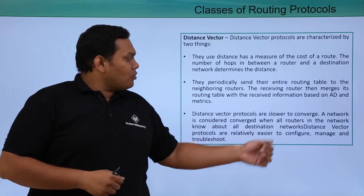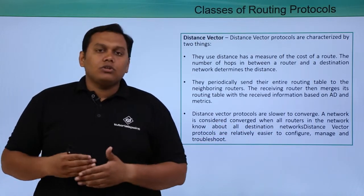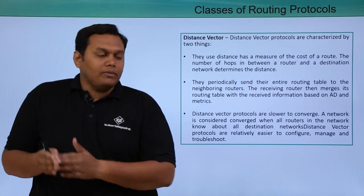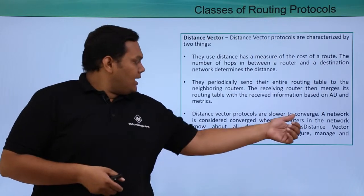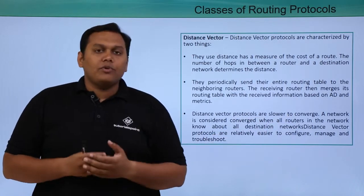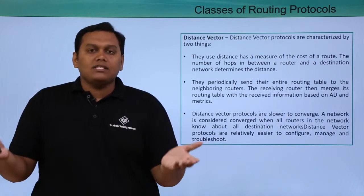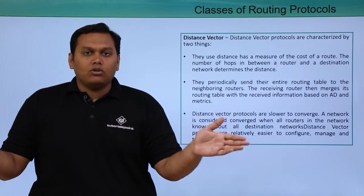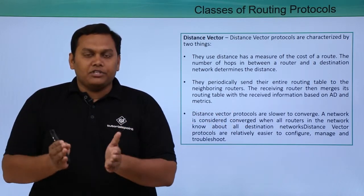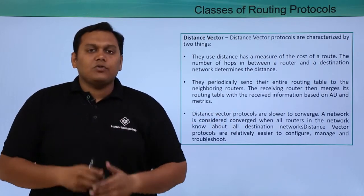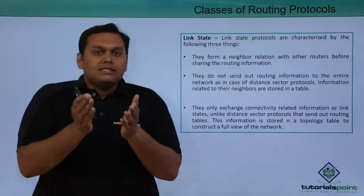Distance vector protocols are slower to converge — they are slow in performance. A network is considered converged when all routers have information about the destination routers.